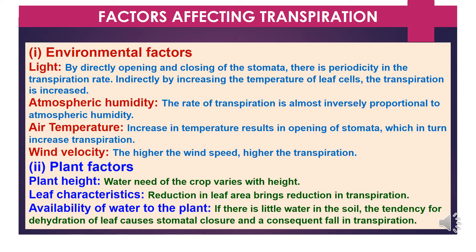Now, factors affecting transpiration. The first category is environmental factors. Regarding light, by directly opening and closing of the stomata, there is periodicity in the transpiration rate; indirectly, by increasing the temperature of leaf cells, transpiration is increased. The second factor is atmospheric humidity — the rate of transpiration is almost inversely proportional to atmospheric humidity. Increase in air temperature results in opening of stomata, which in turn increases transpiration. Higher wind speed also results in higher transpiration.